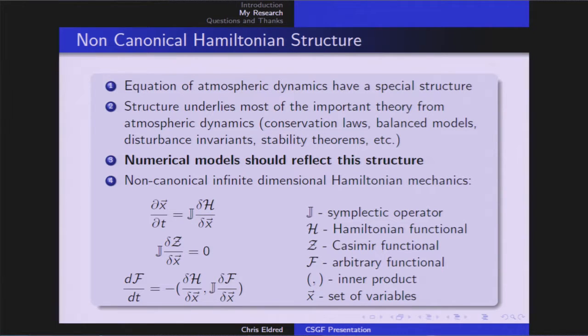When we build a numerical model, it should reflect this Hamiltonian structure. The structure that I'm talking about is the structure of non-canonical, infinite-dimensional Hamiltonian mechanics. The governing equation is given here. The evolution of our set of state variables X is given by the product of our symplectic operator J and the functional derivatives of the Hamiltonian functional H. And really, in all cases of practical interest, the Hamiltonian ends up being the total energy of the system.